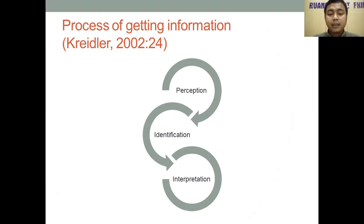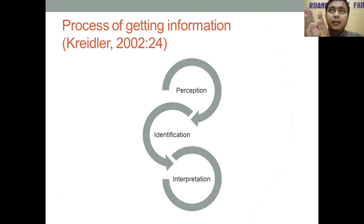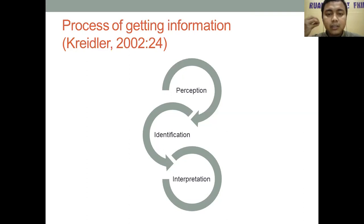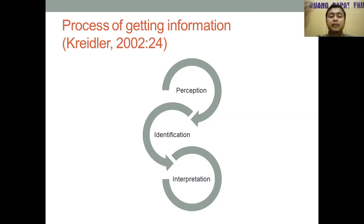According to Kelder's theory, the process of getting information involves three steps: perception, identification based on that perception, and finally interpretation. That's why if we have a positive or negative bias, our interpretation will be shaped by that initial perception. For example, seeing someone who stays at home but earns a lot of money — your interpretation depends on your initial perception and prior experience.